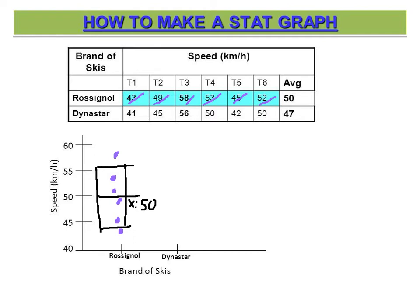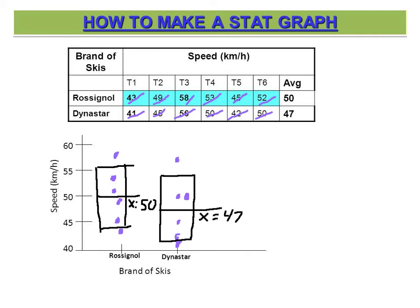Then you do the same thing for the Dynastar skis. So you would plot 41, 45, 56, 50, 42, and another 50. If you get two 50s, you just put them side by side. Then you're going to box in the exact same way — split the difference at the top and split the difference at the bottom. Where it's 47, you're going to put an average bar, and you write x equals 47. So you have a range of errors for this one also.